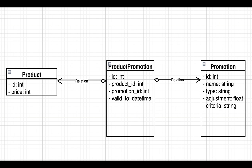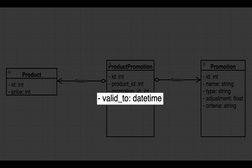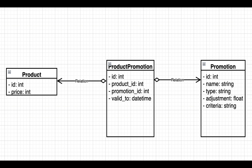So we're going to get rid of that and instead use a many-to-many with an intermediary table. But what I thought would be a better design is to actually model that relationship and have an actual entity representing the relationship between the two. By doing that it means we can add extra fields - for example we might want a 'valid to', in other words until what date should this promotion be applicable to this product. The relationship between these is many-to-one: many product promotions can apply to a single product, and many product promotions can apply to a single promotion. The other fields are the product ID which refers to the product and the promotion ID which refers to the promotion.